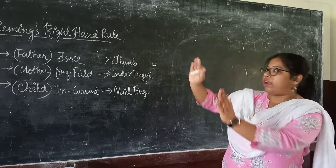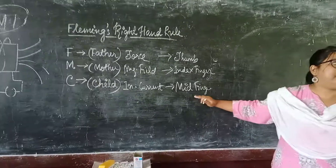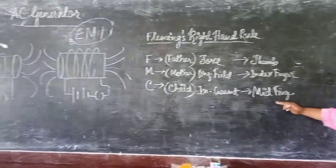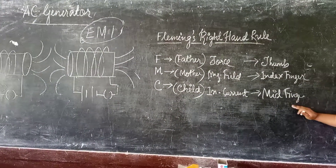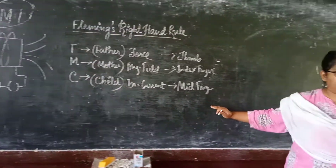And in the AC generator, we are going to use Fleming's right-hand rule. Clear?